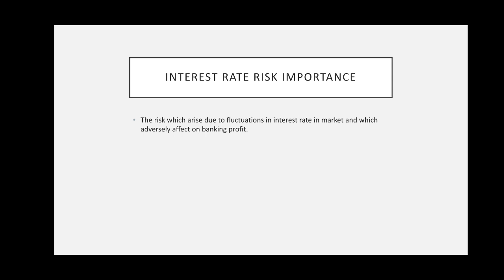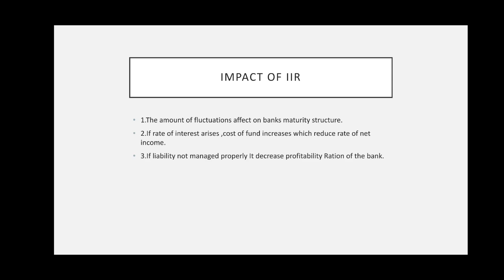Now let us understand the impacts of interest rate risk. Fluctuation in interest rate does not only affect banking profit but also various dimensions of the economy. In this slide, we are going to study the impacts of interest rate risk. The first impact is that fluctuation in the interest rate affects the bank's maturity structure. Always remember: a bank's primary function is to accept deposits, which are classified into two categories — time deposit and demand deposit.